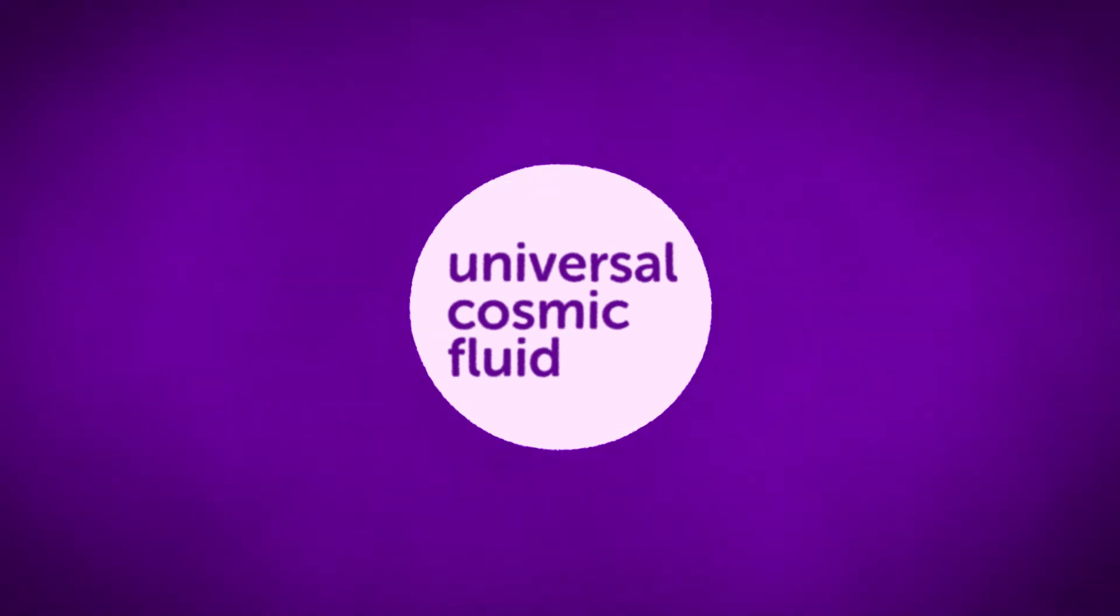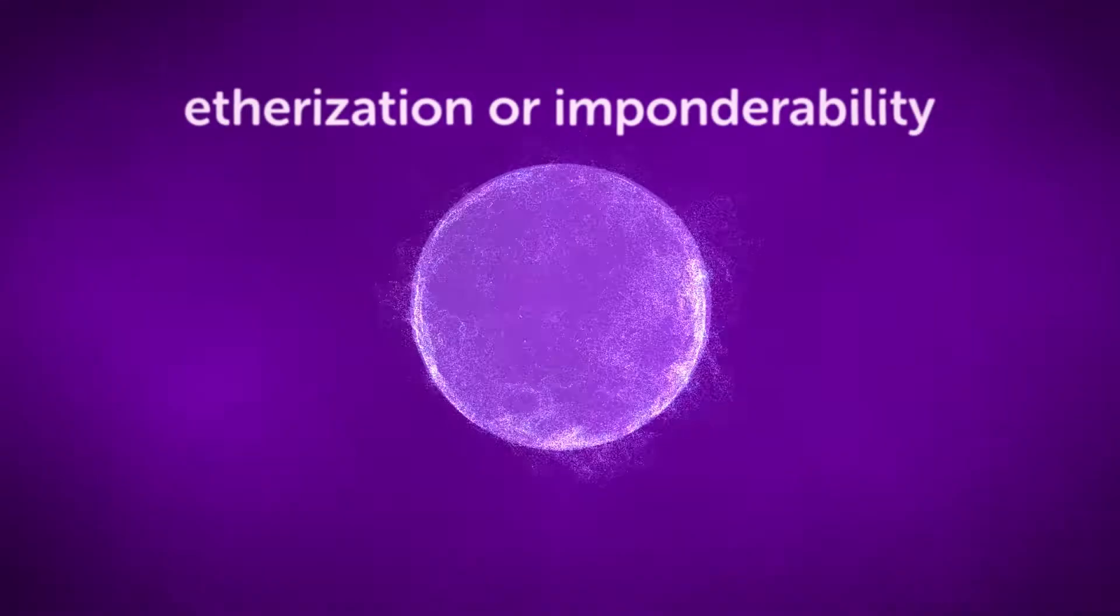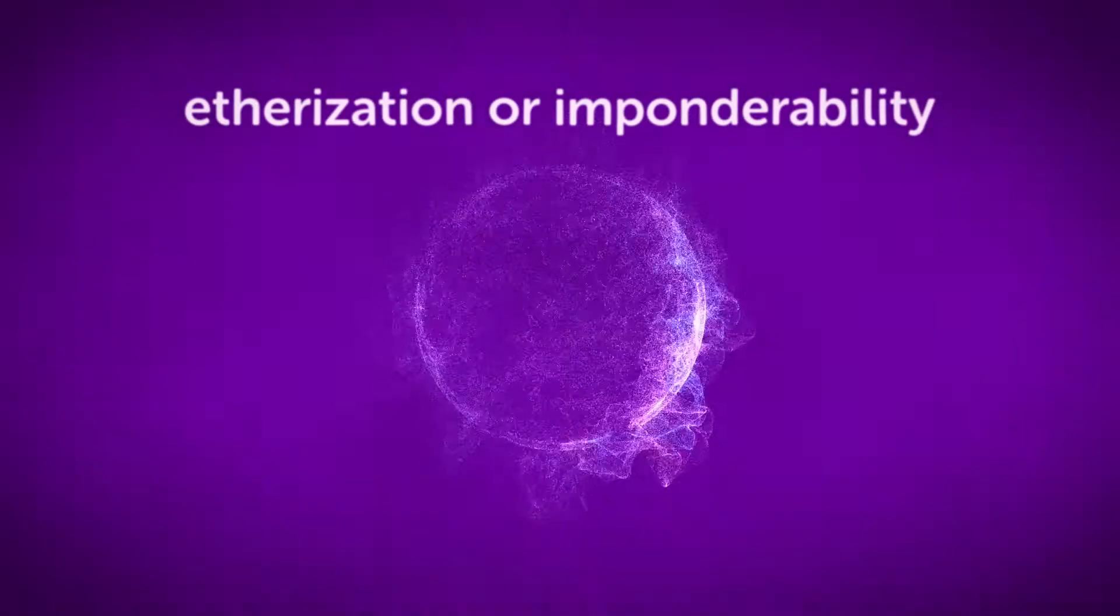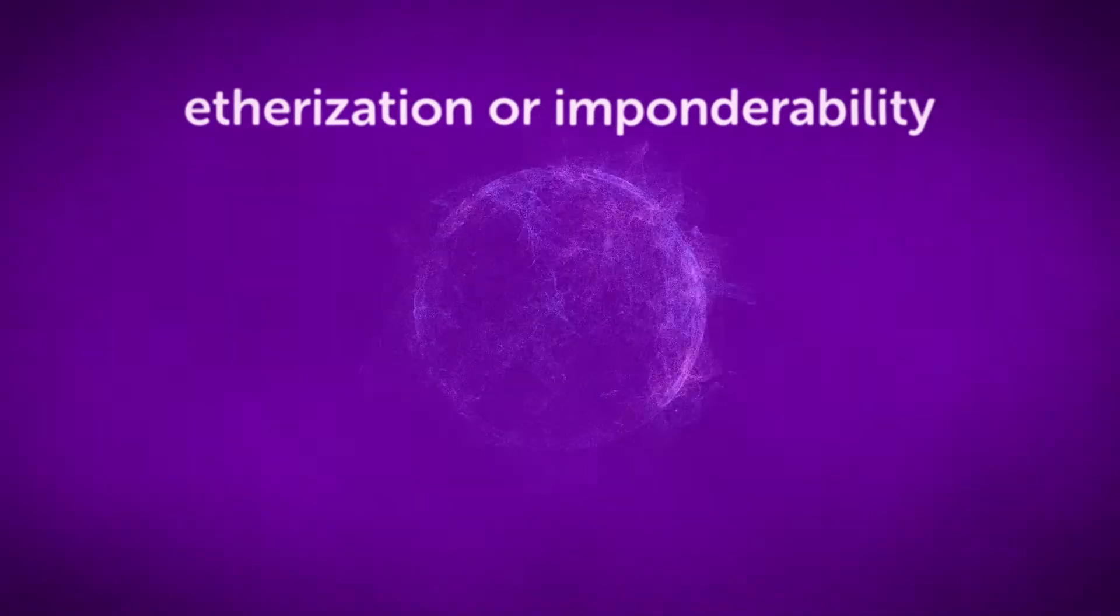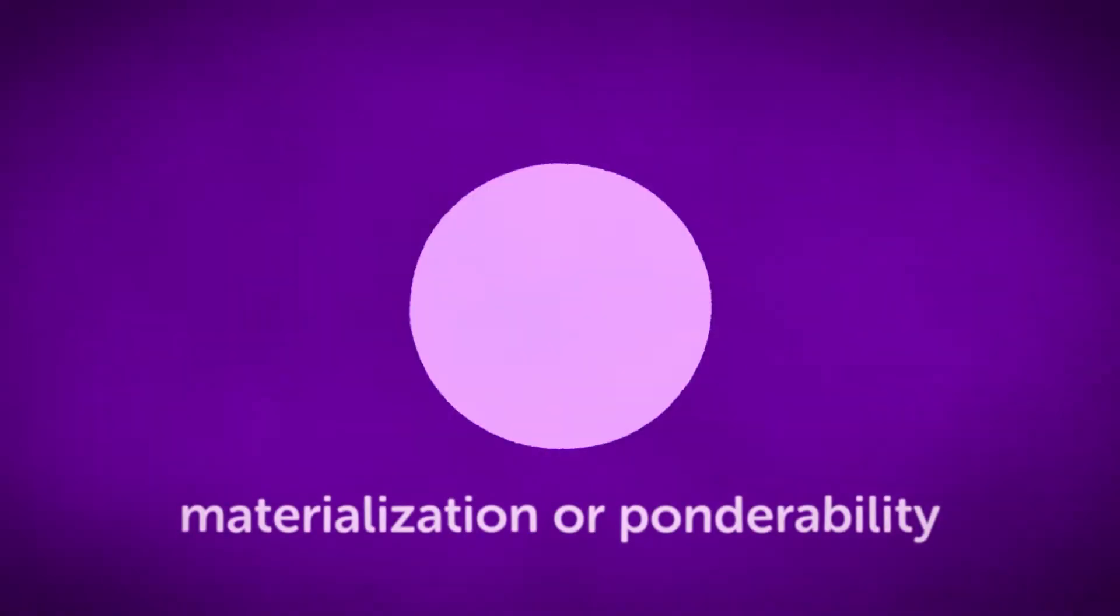As the universal elementary principle, it offers two distinct states: etherization or imponderability, which may be considered the normal primitive state, and materialization or ponderability, which is in a certain way only consecutive to the former.